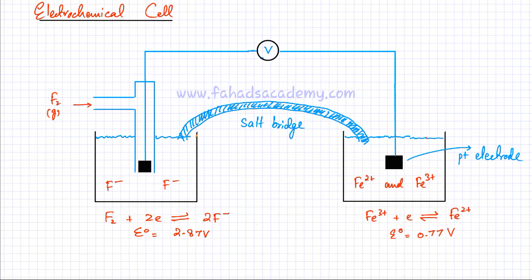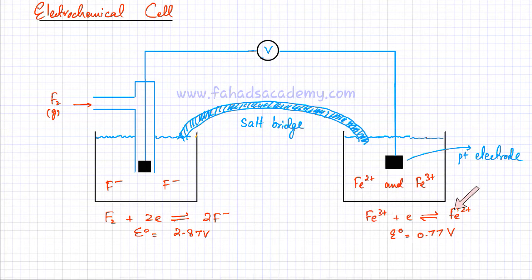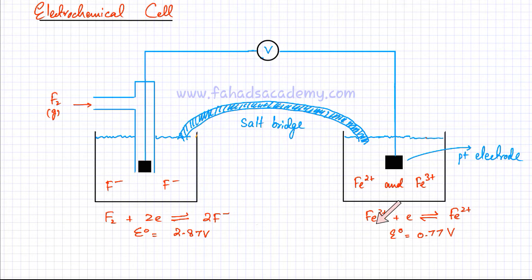If Fe²⁺ has a higher tendency to lose electrons, the equilibrium would shift to the left-hand side. Vice versa, if Fe³⁺ has a higher tendency to gain electrons, the equilibrium would shift to the right-hand side. I've noted down the E-nought value from the data booklet as well — the E-nought for this particular electrode on the right-hand side is 0.77 volts.